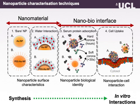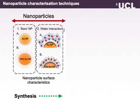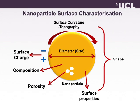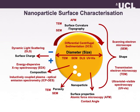Let's begin with nanoparticle surface characterization. What I mean by that is looking at the surface curvature, topography, shape, surface properties of your nanoparticles, diameter, surface charge, composition, or the rest of your nanoparticles. There are loads of methods that you can use to characterize your surface properties.